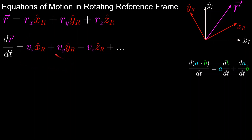Because the unit vectors are constant in the inertial frame, we ignore the first component of the product rule, since the derivative of the unit vector is zero.